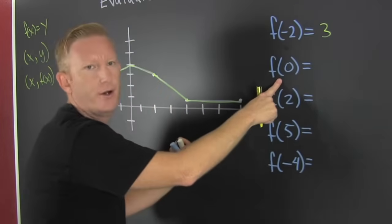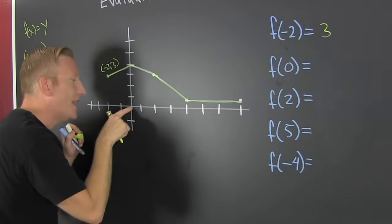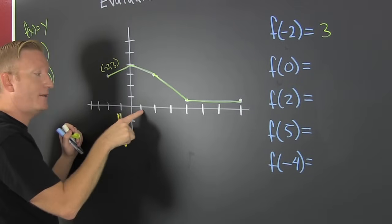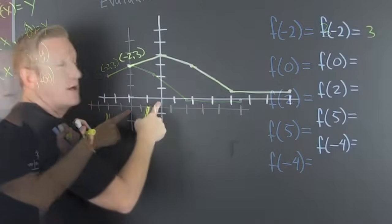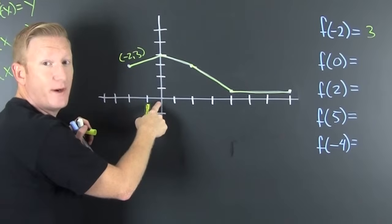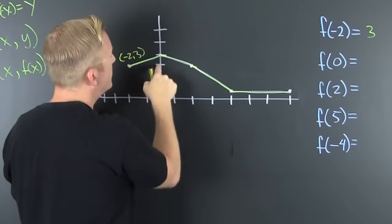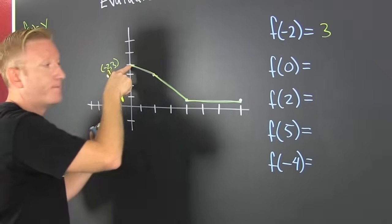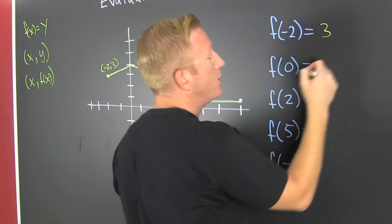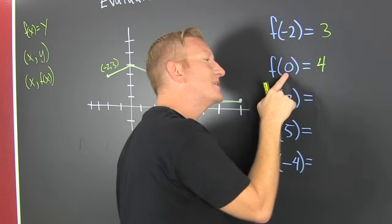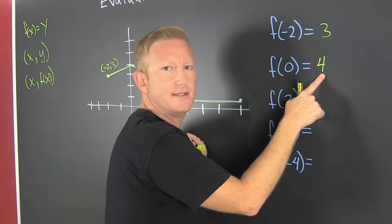Next, f of 0. I go to where x is equal to 0. Not there, not there, right here. When I'm there, I need to see the corresponding y value. 1, 2, 3, 4. So then f of 0 is 4. It's asking what is the y value when x is 0.